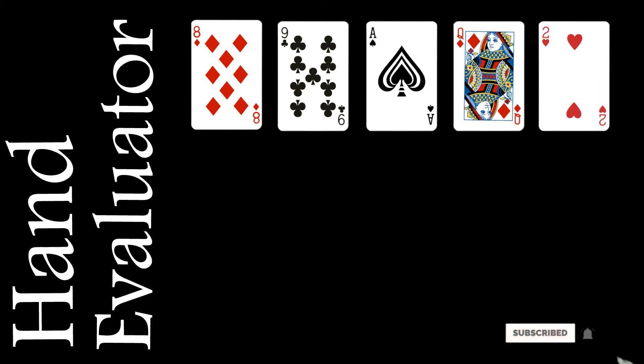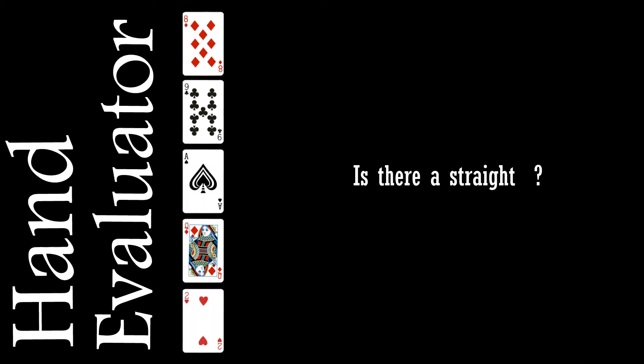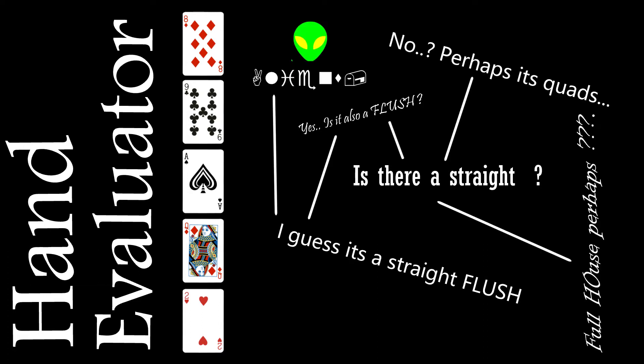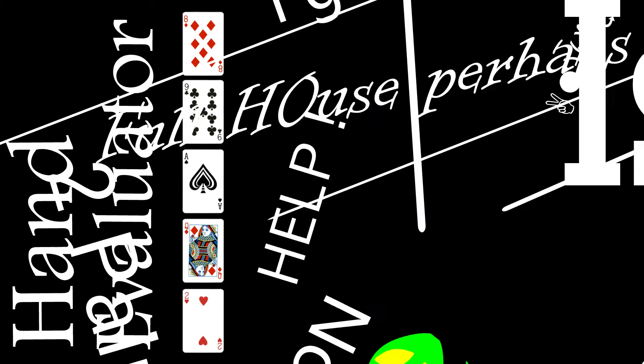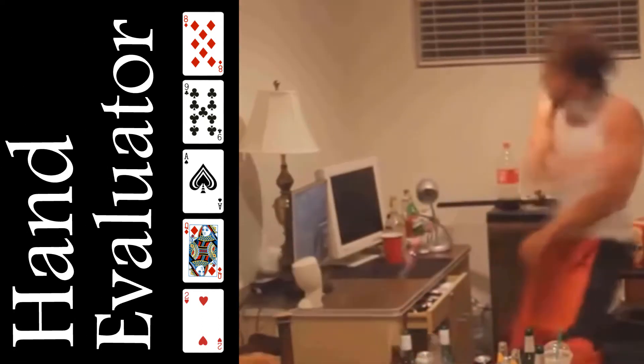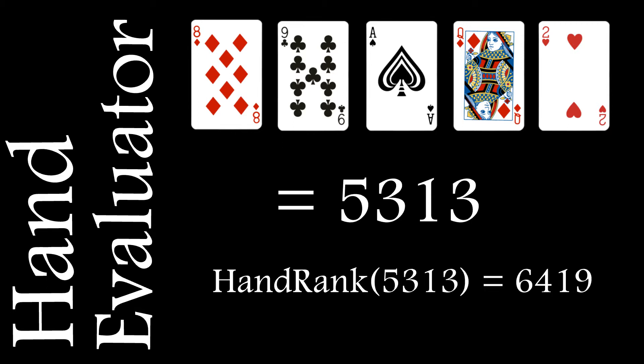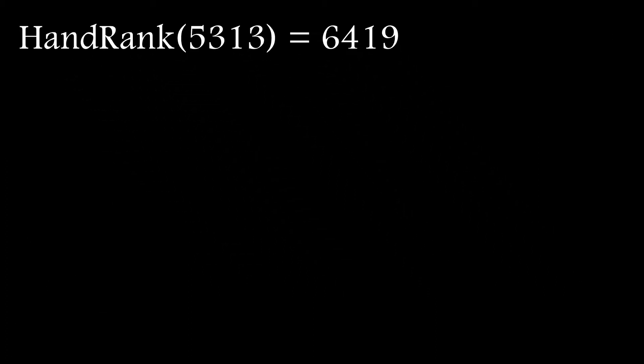Typically when people start out they build what are known as naive evaluators which involves sorting and rearranging the cards as well as some logic which tries to run through all the different possibilities. But ultimately this tends to be a bit frustrating. What's really needed is a function which can take any 5 card poker hand with the cards in any order, convert this into some number and use this as the index in a lookup table to find the correct hand ranking.